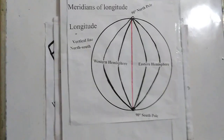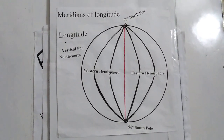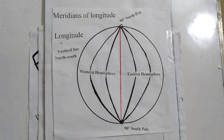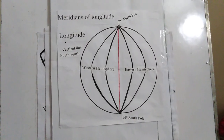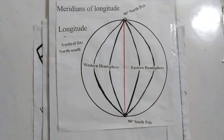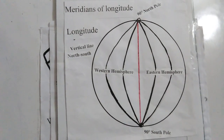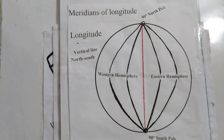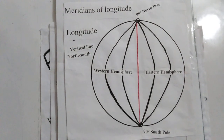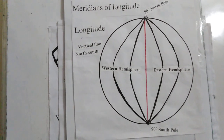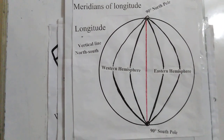Now, longitude. Longitude is the angular distance of any place or region from the prime meridian to the east or west. Like latitude, longitude is measured in degrees. Each degree of longitude contains 60 minutes, and each minute contains 60 seconds. In the figure, you can see a red colored vertical line — it is the prime meridian.